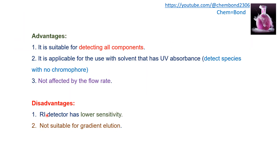Advantages and disadvantages of the refractive index detector: it is a bulk property detector so it will detect all components; it is applicable to solutes with no UV absorbance and can detect species with no chromophore; and it is not affected by flow rate. Disadvantages include lower sensitivity, and it is not suitable for gradient elution.